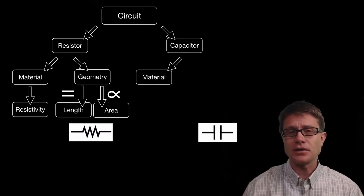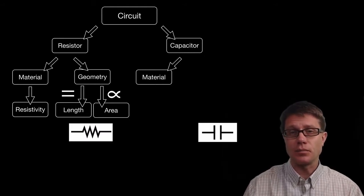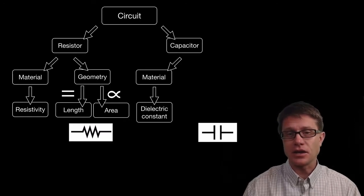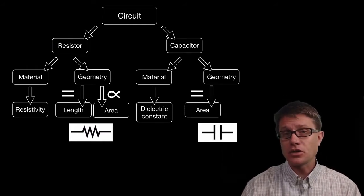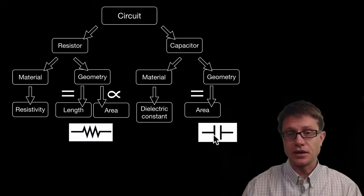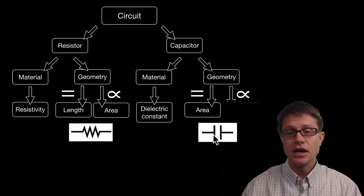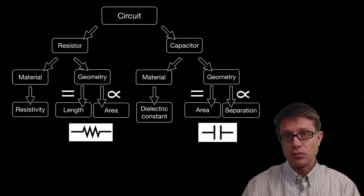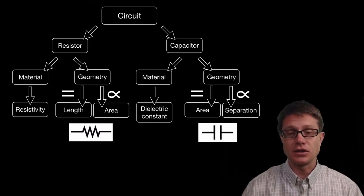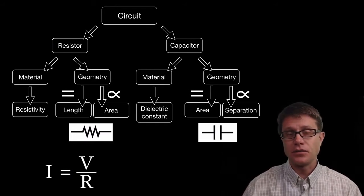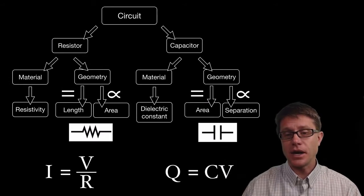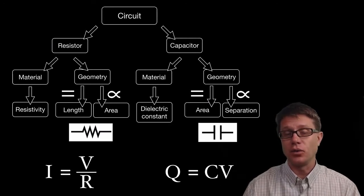A capacitor is based on the material as well — specifically the material between the two plates, which we call the dielectric. The higher the dielectric constant, the greater the capacitance. Geometry affects it too: the larger the cross-sectional area of the two plates, the greater the capacitance, and there is an indirect relationship with the separation between the plates — the narrower the gap, the greater the capacitance. To measure the current through a resistor, we use Ohm's law: current equals voltage divided by resistance. For a capacitor, we measure the charge that sits on it, which equals the capacitance times the voltage.